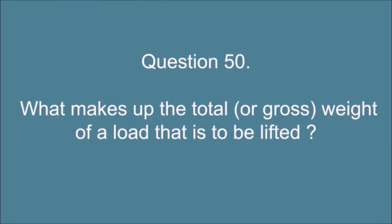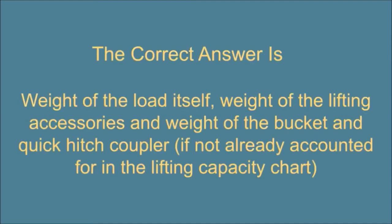Question 50. What makes up the total, or gross, weight of a load that is to be lifted? The correct answer is: weight of the load itself, weight of the lifting accessories and weight of the bucket and quick hitch coupler, if not already accounted for in the lifting capacity chart.